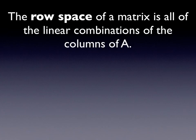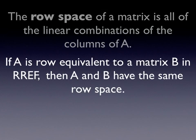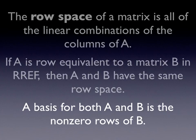The row space of a matrix is all of the linear combinations of the rows of A. If A is row equivalent to a matrix B in reduced row echelon form, then A and B have the same row space. Getting from A to B via elementary row operations means both A and B have the same row space, and therefore a basis for both is the non-zero rows of B. So we can find a basis for the row space of A by putting it into reduced row echelon form and looking at the rows corresponding to leading ones.